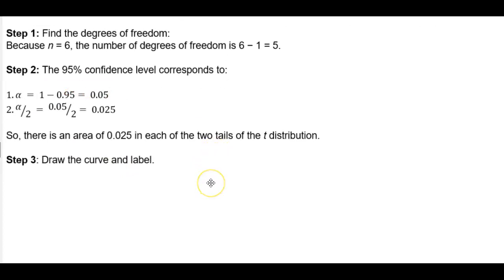So what we want to do is draw the curve and then label it. So here we're drawing our curve. We're dealing with the t distribution, so this is the t scale. We know that the mean is going to be 0.